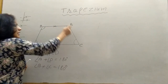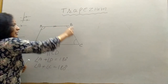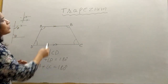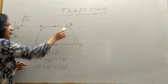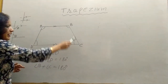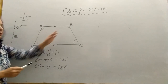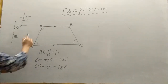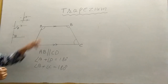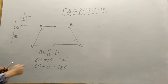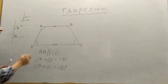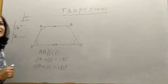ABCD is a quadrilateral. We have one pair of opposite sides parallel, so AB is parallel to CD and AD is not parallel to BC. ABCD is a trapezium because one pair is parallel. Now AB is the base of the trapezium and DC is also the base of the trapezium.